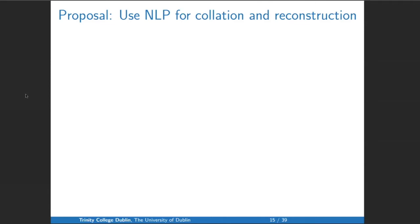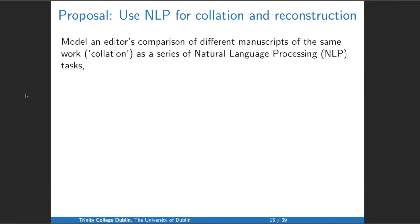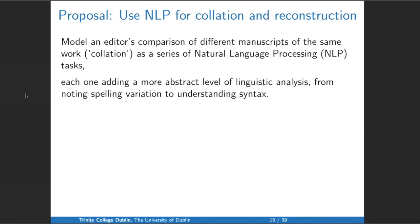My proposal is instead that we use natural language processing for the steps of collation and reconstruction — not for drawing up a stemma, at least not for the Kanjur. We should model an editor's behavior in comparing different manuscripts as a series of natural language processing steps, each one adding a more abstract level of linguistic analysis — from noting spelling variation up to understanding syntax.